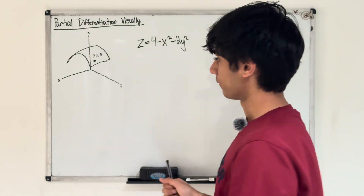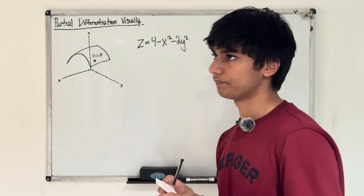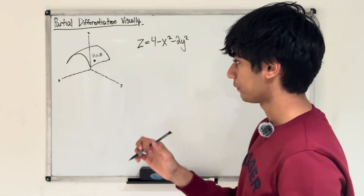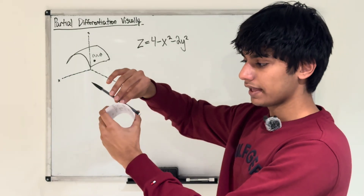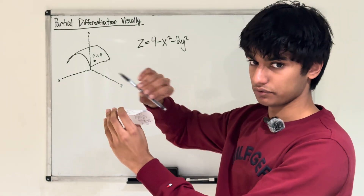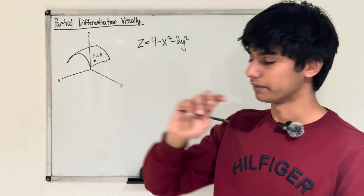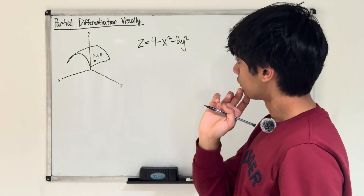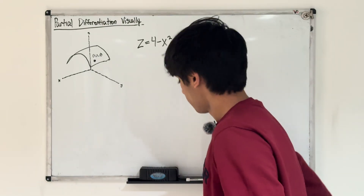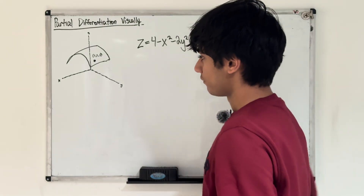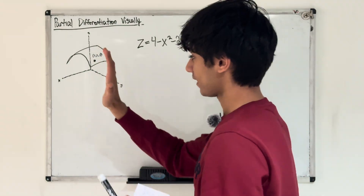There's going to be multiple derivatives there, and so the idea with partial differentiation is instead of taking the derivative of the entire section, we want to find the derivative in only one direction. Because there's going to be an infinite amount of directions we can take the derivative in, and therefore an infinite amount of lines that would create just one plane.